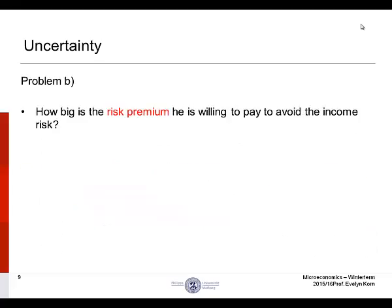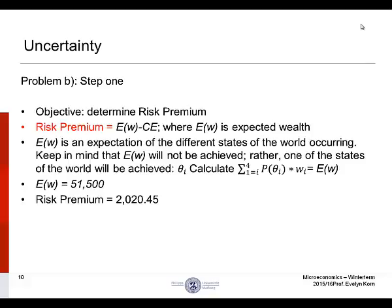We are on problem B. How big is the risk premium he is willing to pay to avoid the income risk? The objective is to determine the risk premium. Risk premium equals expected wealth minus the certainty equivalent. Expected wealth is an expectation of the different states of the world occurring. Keep in mind that expected wealth will not be achieved; rather, one of the states of the world will be achieved. Expected wealth equals sum of probability-weighted outcomes, which is 51,500. If we subtract the certainty equivalent of 49,479.55, we have a risk premium of 2,020.45.